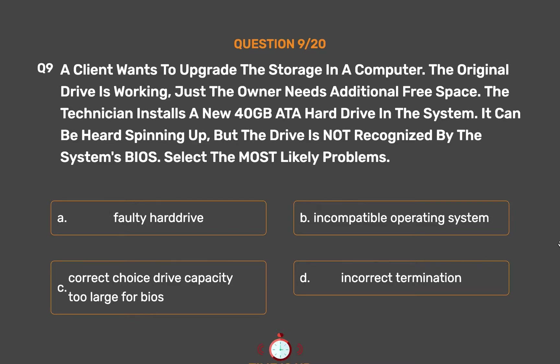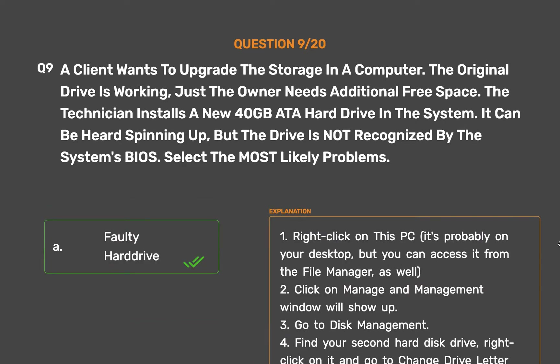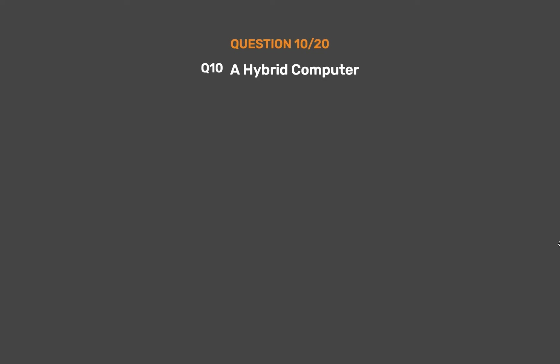The correct answer is Option A: Faulty hard drive. Right-click on This PC — it's probably on your desktop, but you can access it from the file manager as well. Click on Manage and the management window will show up. Go to Disk Management, find your second hard disk drive, right-click on it and go to Change Drive Letter and Paths.